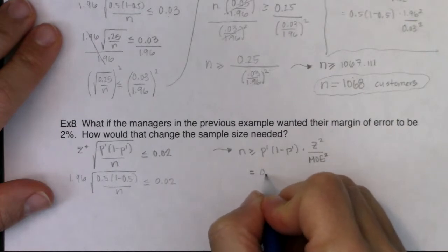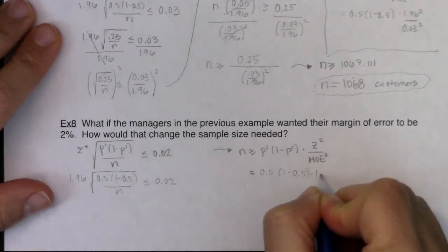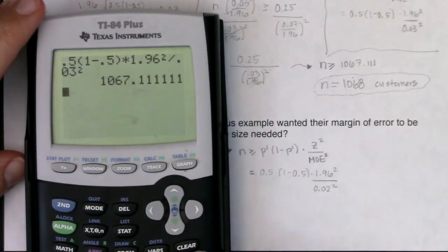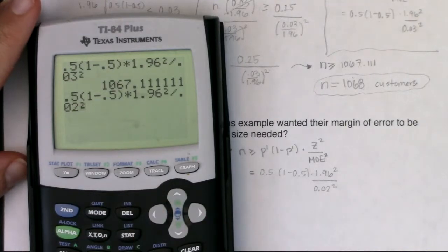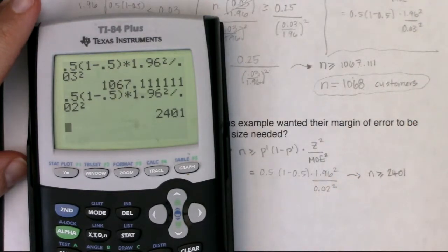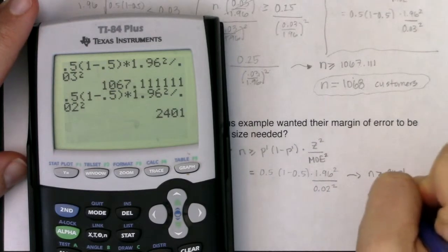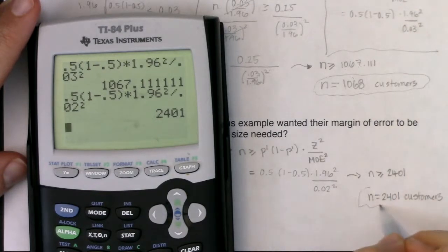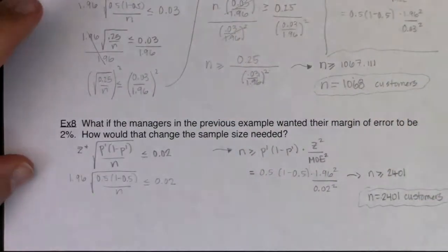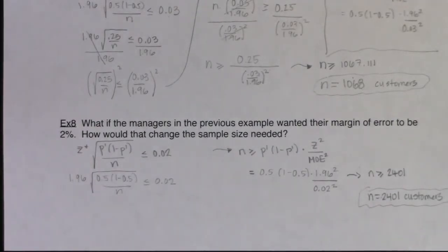If I plug in 0.02 this time, n has to be greater than or equal to 2,401. And since it has to be a whole number, I can use exactly 2,401 customers. So you can see — just to go from a 3% margin of error down to 2%, you have to more than double your sample size. It's a lot to get that margin of error to reduce. That's our look into proportion land. We're going to switch over to mean land, which we dealt with in chapter seven, and we're going to extend upon that on the next page.